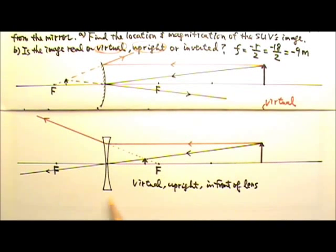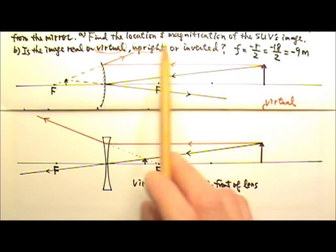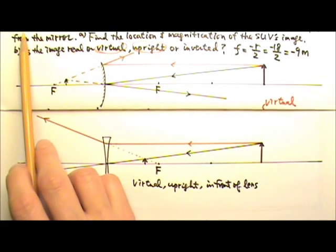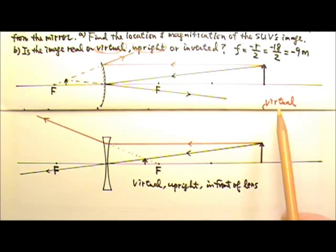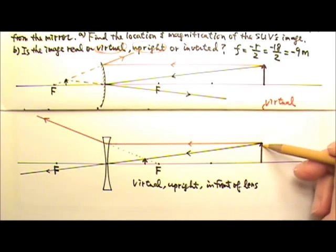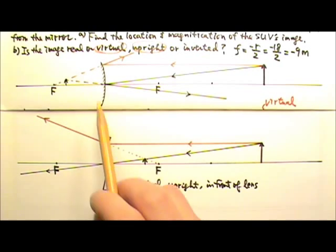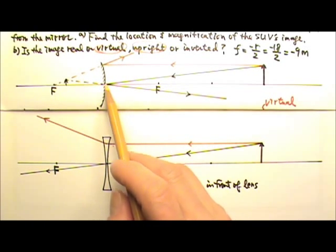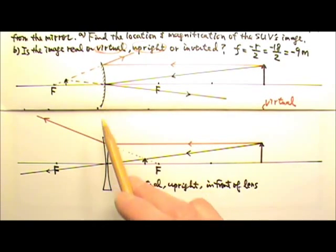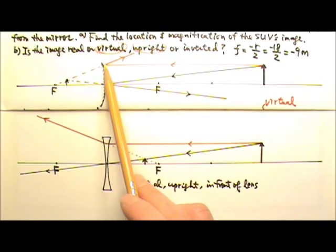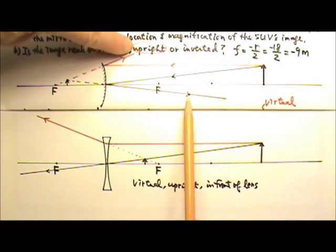Now let's compare this ray tracing diagram to the ray tracing diagram we did in lesson 14, the problem about the passenger side rear view mirror. In both cases, I drew the object three times the focal length away, one, two, three, one, two, three. And both the convex mirror and the diverging lens, they diverge light. The only difference here is that the mirror reflects light. So the reflected rays are these two over here.